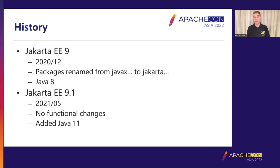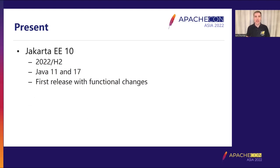Shortly afterwards, in May 2021, there was Jakarta EE 9.1 — no new functional changes, but added certifications for Java 11. That brings us to Jakarta EE 10, which is very nearly finished. As I'm recording this, there are just a couple of specifications left with a few TCK failures in their compatible implementations that need to be fixed. Once sorted, we should be clear to do the full Jakarta EE 10 release, hopefully in the second half of this year. Jakarta EE 10 has a minimum Java version of 11, can also be certified with Java 17, and was the first release with functional changes compared to Jakarta EE 8.